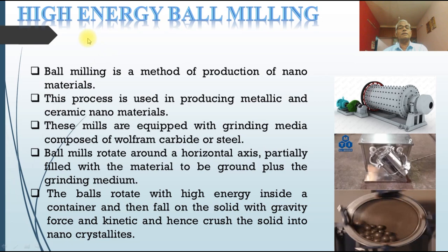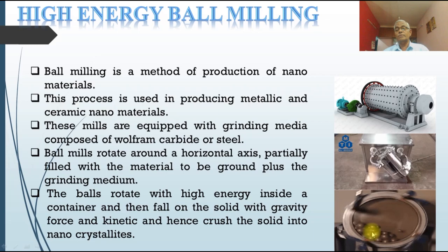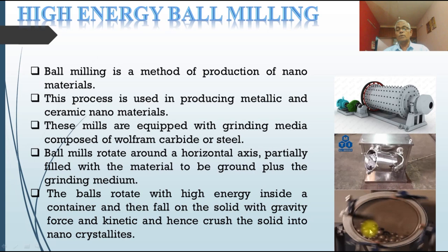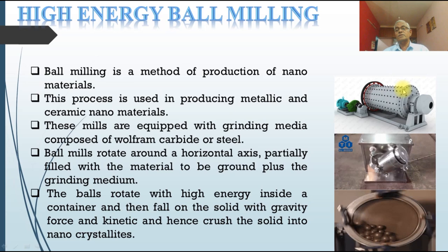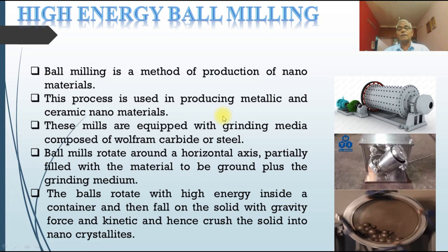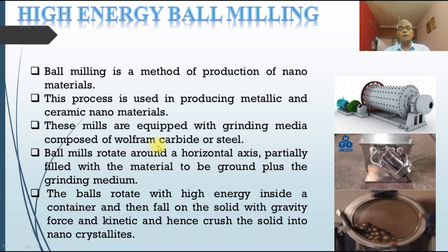The first method is high energy ball milling. As you can see in the pictures, there are small balls of different sizes and the material is placed in a box. This can be rotated vertically as well as horizontally, so the material comes into contact with the balls in the gap between them. Various kinds of ball mills exist. This process produces metallic and ceramic nanomaterials — particularly for producing nanoparticles of metals or ceramics.